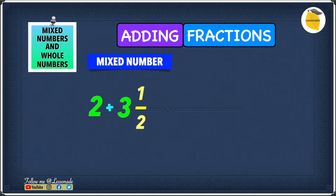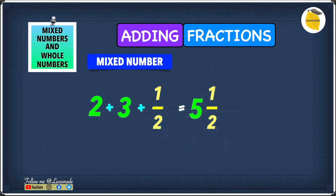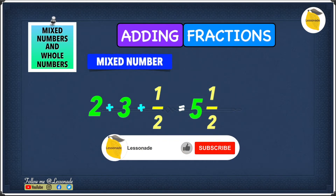As we said before, 3 1 over 2 can also be written as 3 plus 1 over 2, and as you can see the question looks much simpler. So 2 plus 3 will be 5, and then 5 plus 1 over 2 will be 5 1 over 2. So our answer to this question is 5 1 over 2.